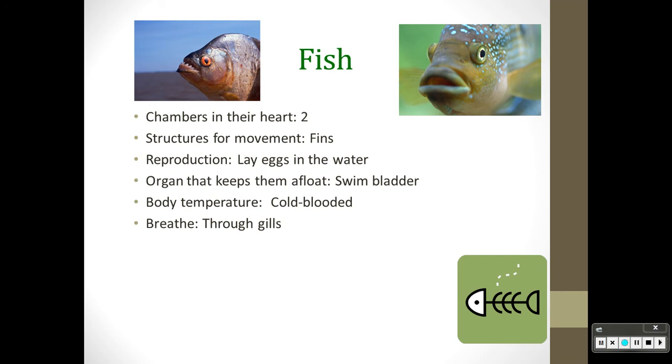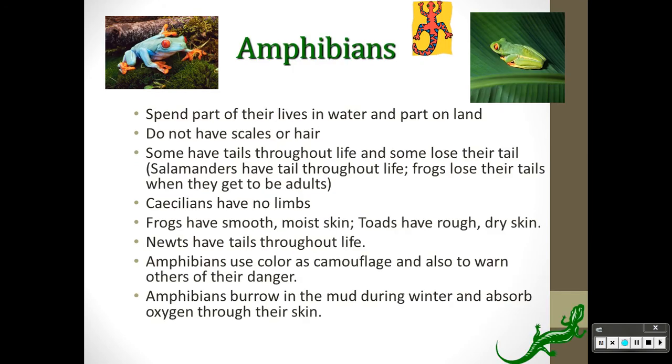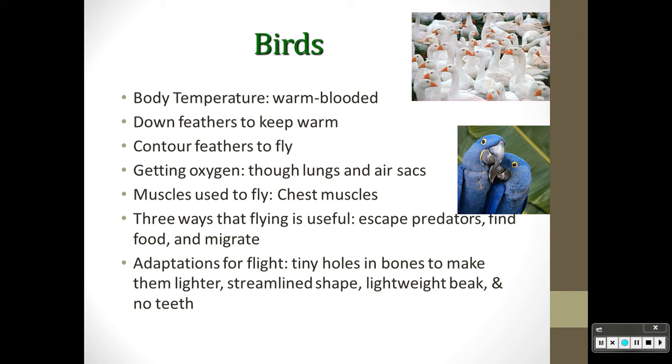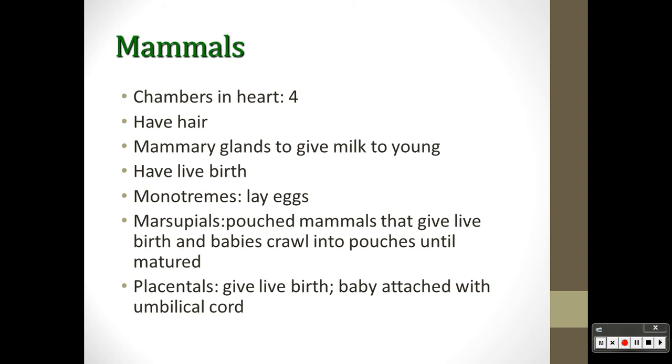Real quick, we're gonna bang through it and get it done. First group is fish: they have a dual chambered heart, they can move using fins, they lay eggs, swim bladder. Amphibians: smooth moist skin is the big one. Reptiles: dry scaly skin is the big one. Birds or aves, and then mammals. What you want to do with that information is turn it into some sort of a table.